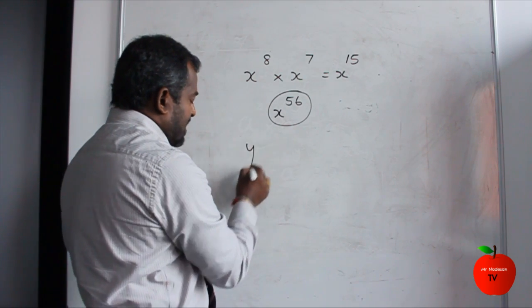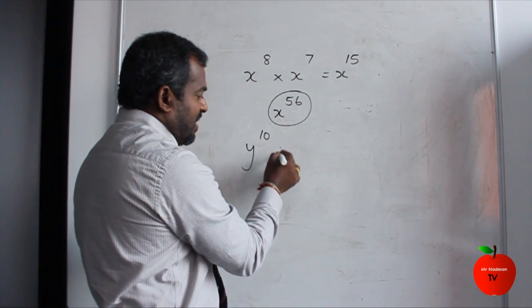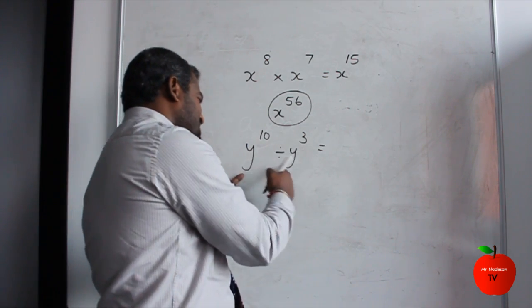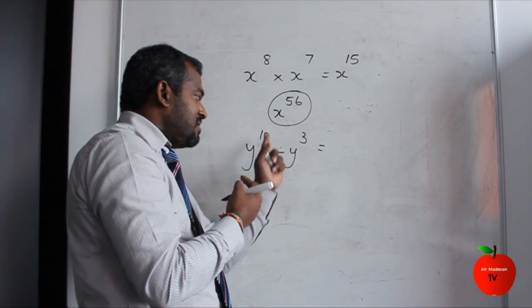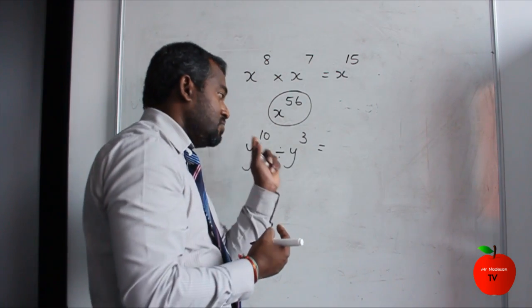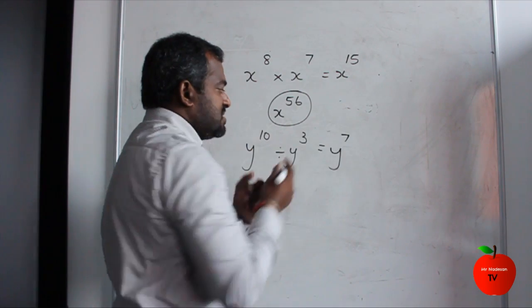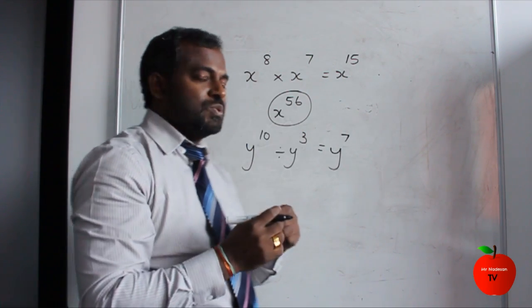The next one: y to the power 10 divided by y to the power 3. Now, you can see the base is equal. When you divide, you subtract the powers, not divide them. So we subtract now: 10 minus 3 equals 7. So we've done the two rules,